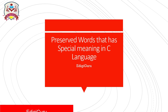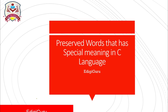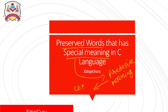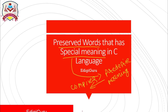Keywords are reserved words that have a special meaning or predefined meaning, which is already known to the compiler. For example, in our home we have a washing machine, and it can only be used for washing clothes and not for any other purpose, such as cooking. It is reserved for washing and drying clothes only. The embedded systems inside the washing machine are reserved for doing that function only.